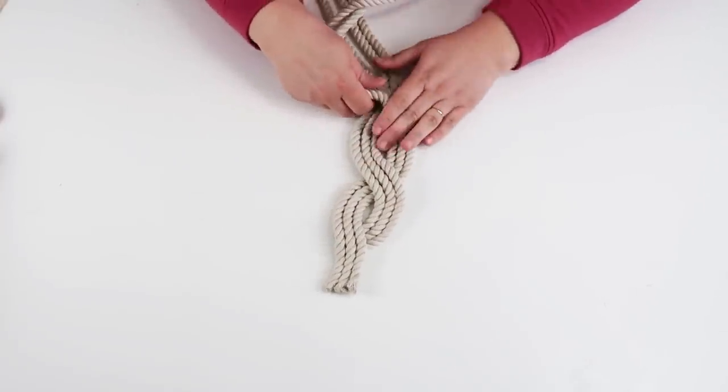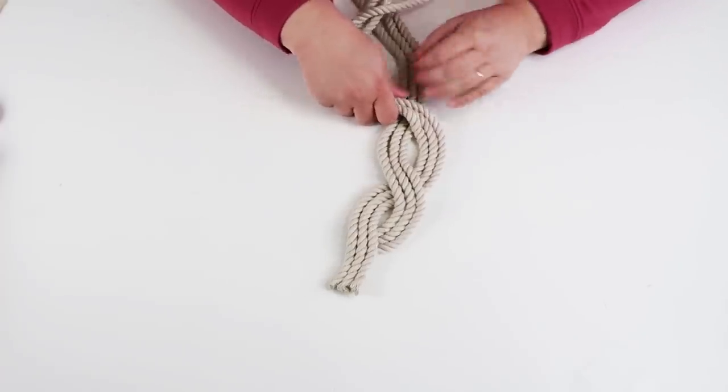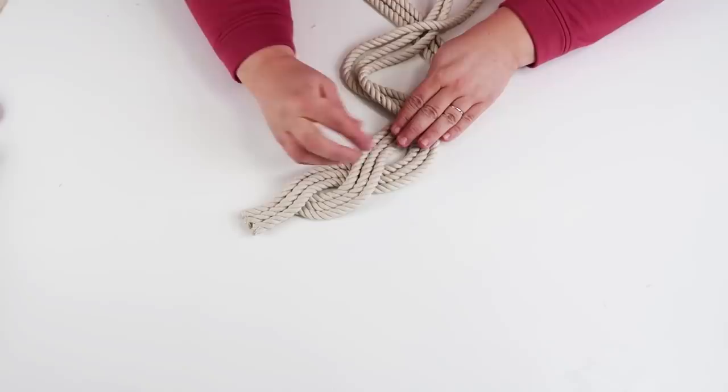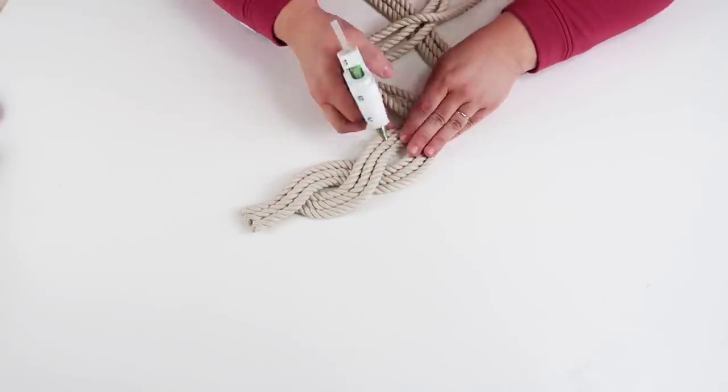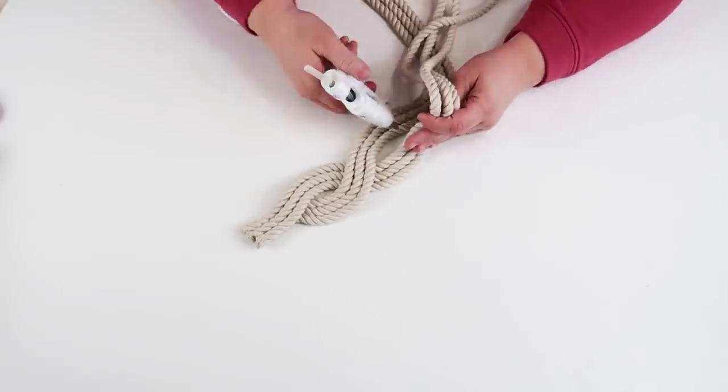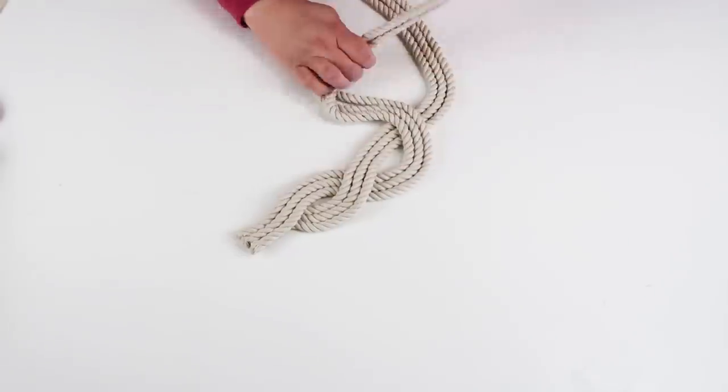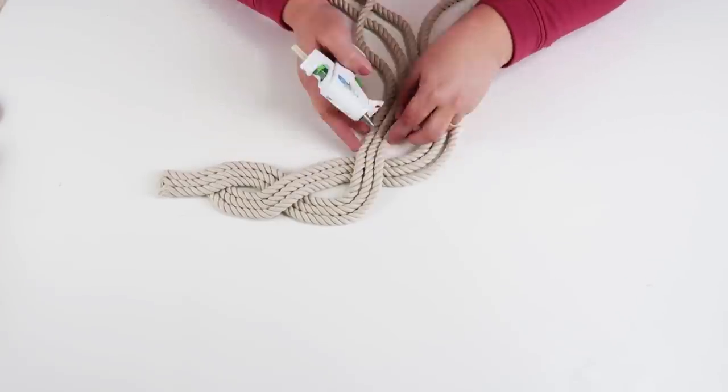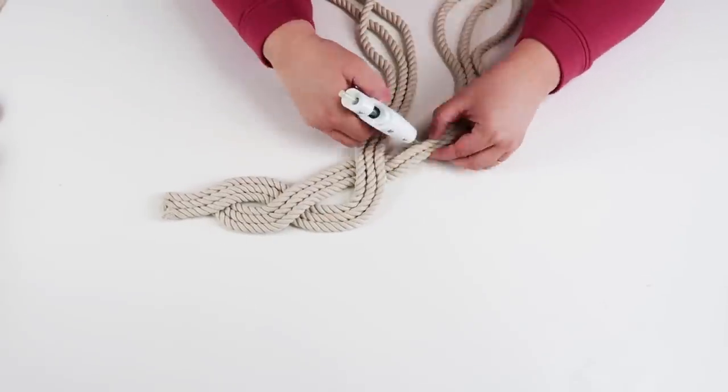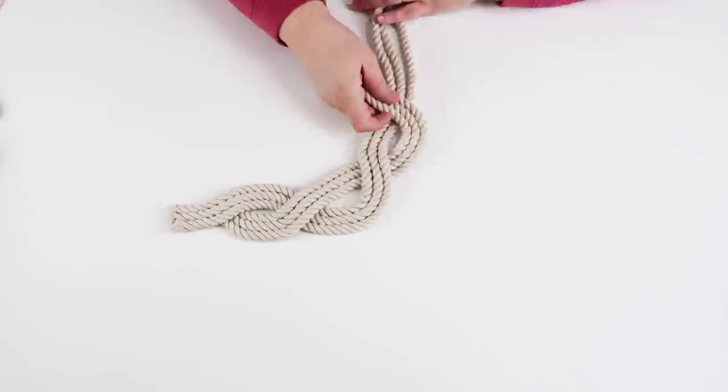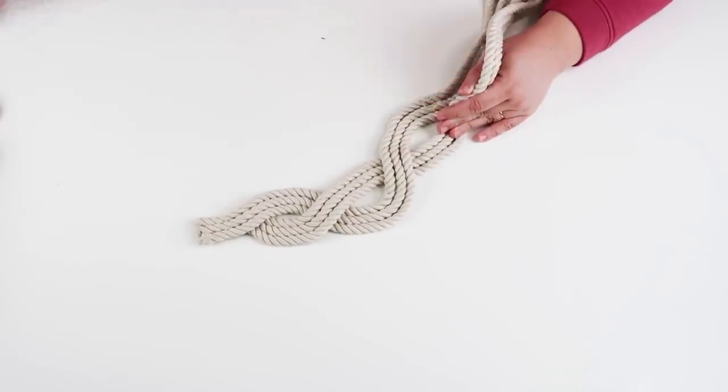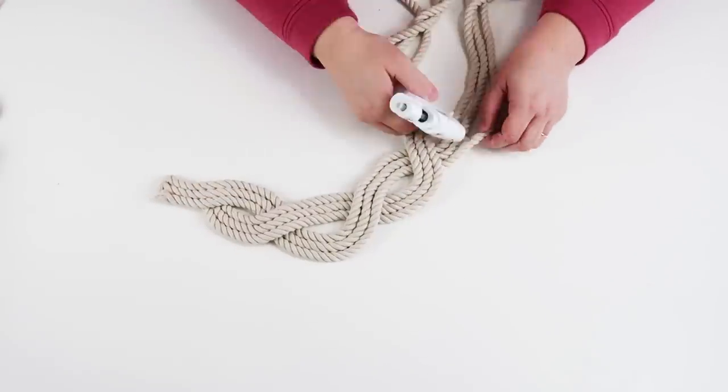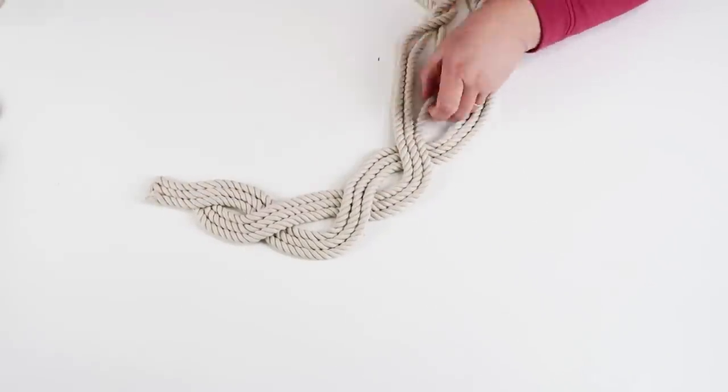As you're going, you're going to want to make sure that you're gluing the ropes to keep their form because we're still working in the form of a circle. This is where it does get a little bit tricky, so make sure when you're gluing that you're curving your rope so it doesn't go too straight and doesn't lose the form of the circle. You're just going to keep doing this over and over again until you get to the very end of the rope.